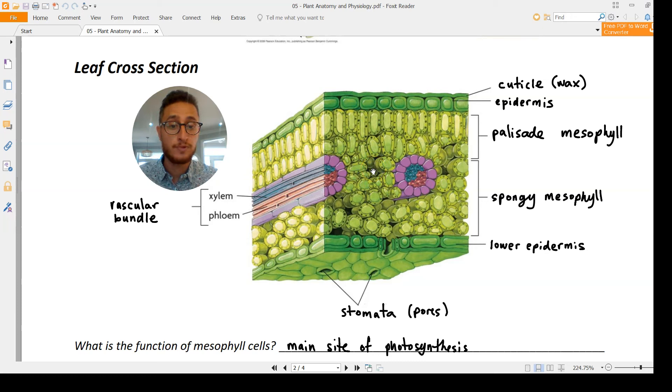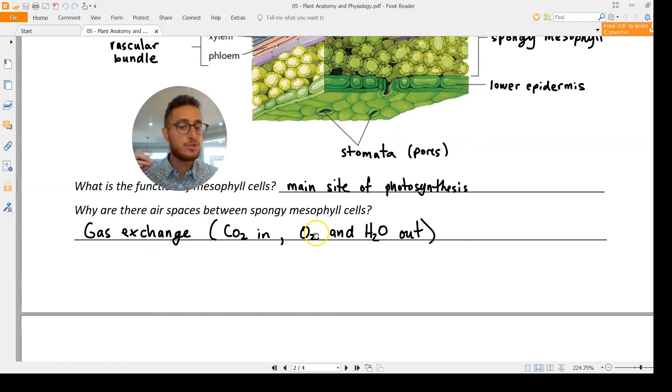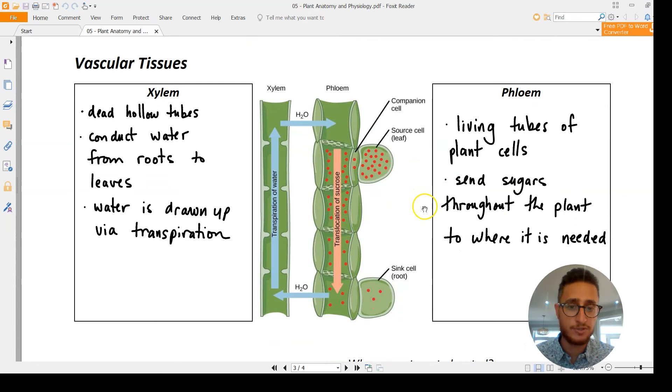The main site for photosynthesis is this ground tissue that we call mesophyll. Why are those air spaces there? That's for gas exchange, CO2 in and oxygen and some water out. We're going to revisit in a minute how the plants use that water loss to their advantage.